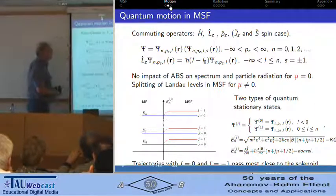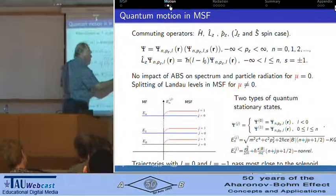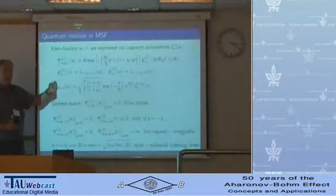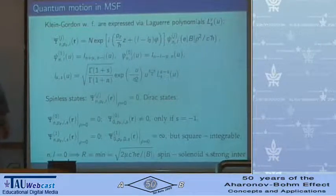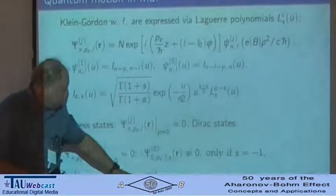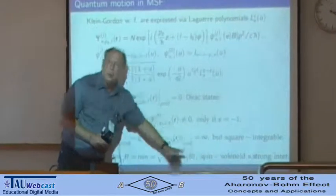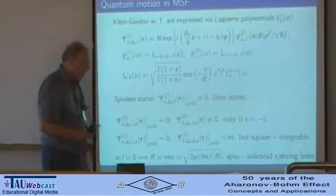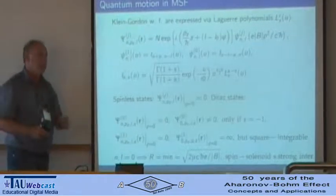Here we can see the wave functions. The important point is that the radial motion is described by Laguerre polynomials. As to the asymptotics — the behavior on the solenoid line — which could be unusual for people who work with the Aharonov-Bohm effect: for these states we have a wave function which goes to infinity but is still square integrable. This is the so-called super-strong spin-solenoid interaction, where the real electron feels the Aharonov-Bohm field.